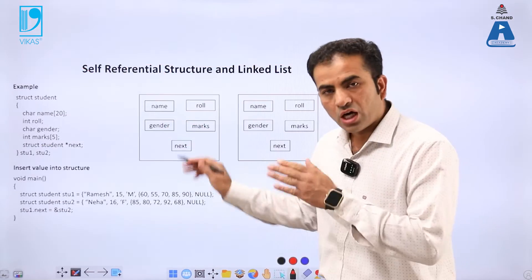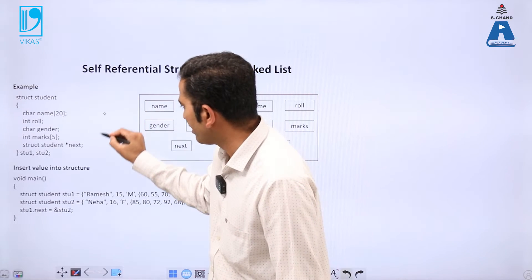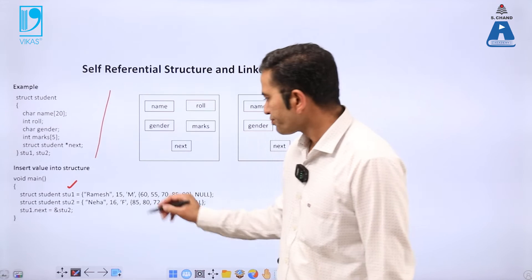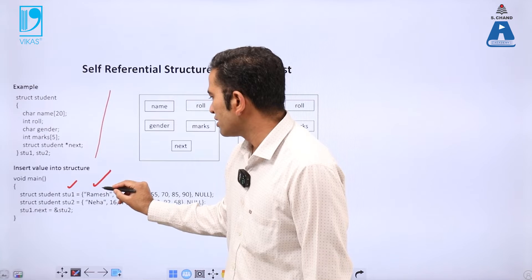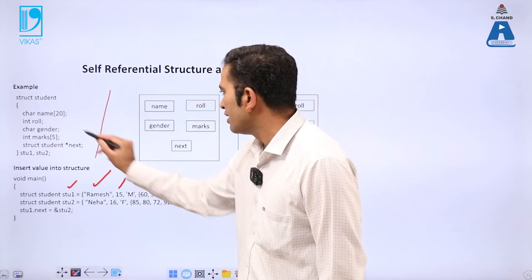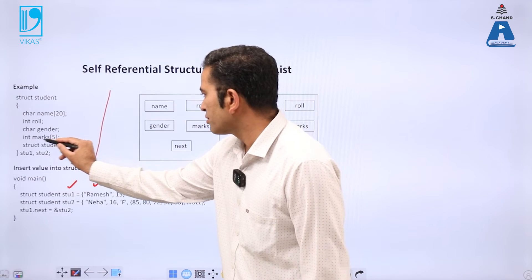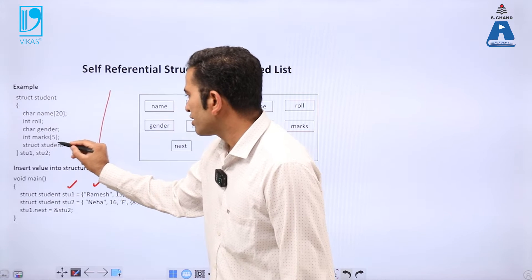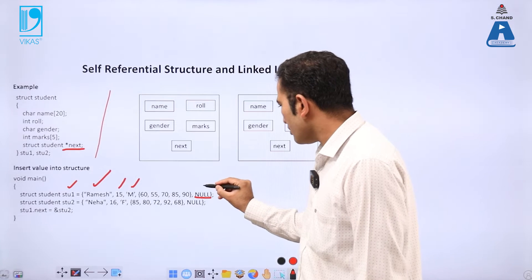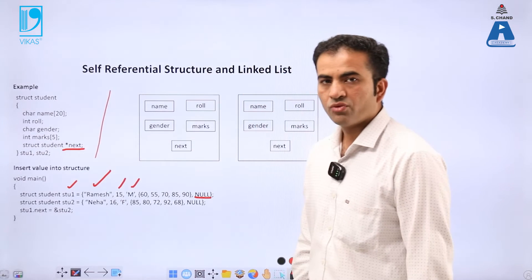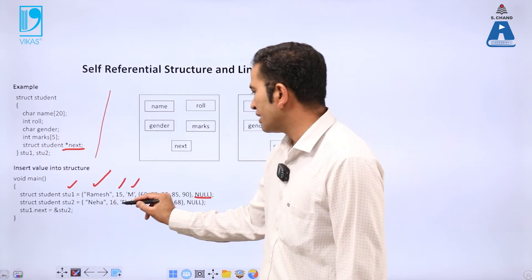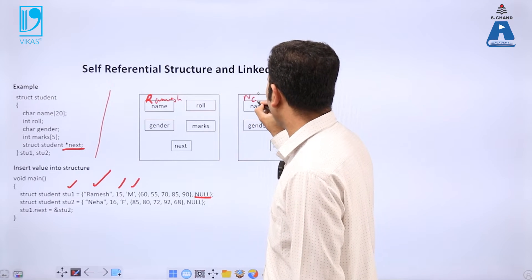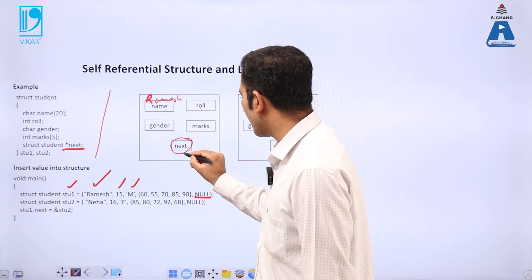How to insert values into the structure: for student 1 we save the name (character type), row number as 15, gender as male, and marks as 60, 55, 70, 85, and 90. The next pointer is assigned null — meaning no connection yet. For student 2 (Neha, roll number 16), the same process applies, and next is also null. So initially there is no connection between the two nodes.